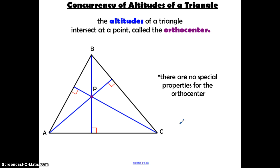If you find all three altitudes of the three sides of a triangle, so from this vertex B perpendicular to side AC, from vertex A perpendicular to side BC, and from vertex C perpendicular to side AB, those three altitudes will intersect at a point P, called the orthocenter. There are no special mathematical properties for the orthocenter.